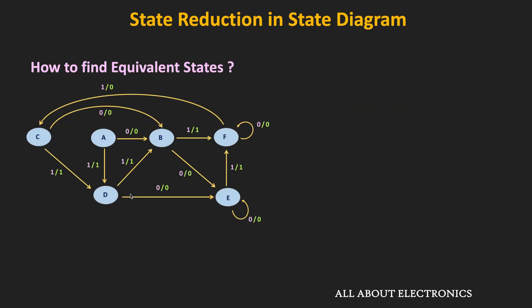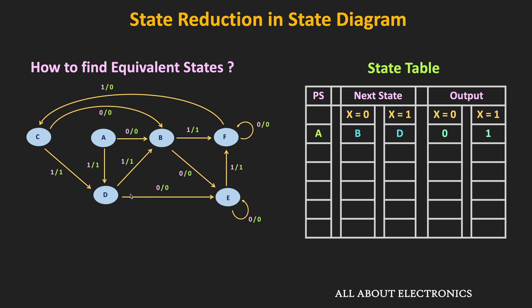Let's say this is the state diagram of the finite state machine. Once we have the state diagram, first of all we need to check if there are any equivalent states in the diagram. To check that, let us draw a state table from the state diagram. In the state table, we will have the present state, the next state, and the output. As you can see in the state diagram, when the present state of the machine is A and the applied input is 0, then it will go to the B state, and at that time its output is equal to 0.